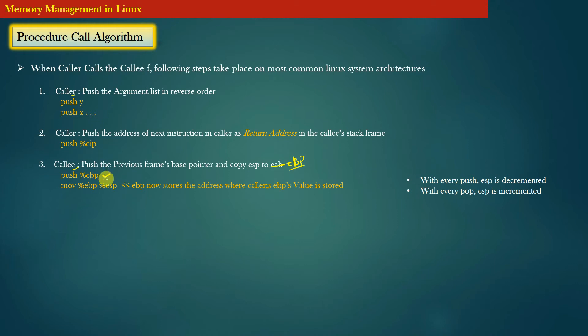You can see that the old value of base pointer register is stored into the stack memory of the callee function, and then the base pointer register value is updated as per the callee's stack frame. So after execution of this instruction, EBP register now stores the address where caller's base pointer register value is saved in the callee's stack frame.